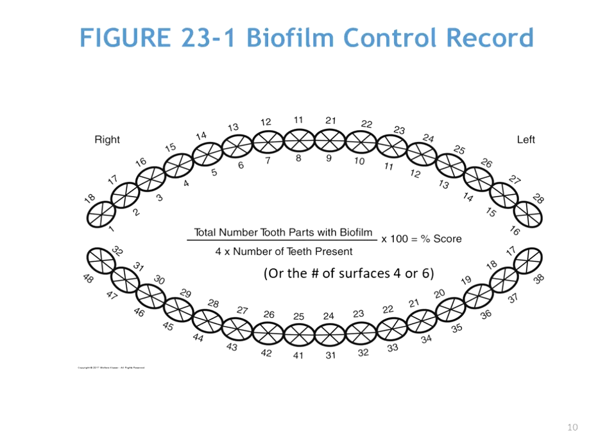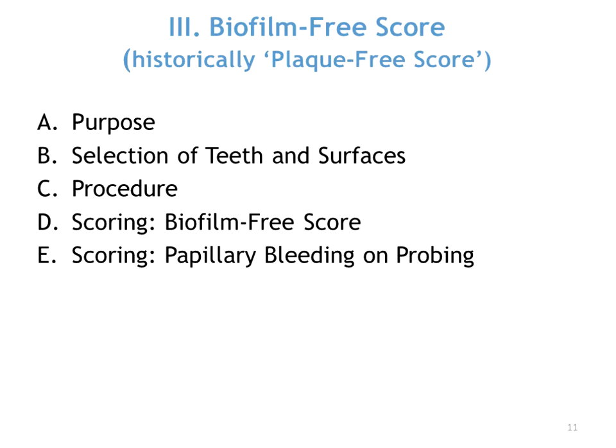This is the O'Leary biofilm control record or plaque index, which is what we use in clinics. We don't currently have the schematic on Dentrix. This can be used with either the FDI system or the universal system, depending on which worldwide numbering system is being used. The calculation is the total number of tooth parts with biofilm divided by four or six times the number of teeth present, then multiplied by 100 to get the percent. We're looking for a small percent, which means the patient is doing an adequate job.